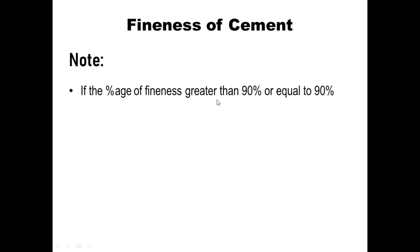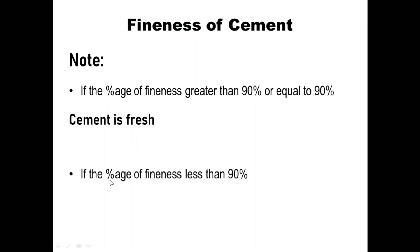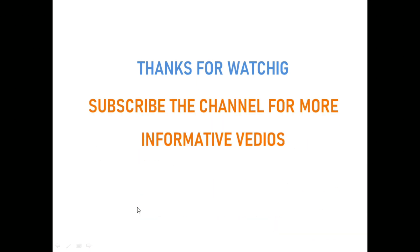Note: if the percentage of fineness retained is less than or equal to 10% (i.e., passing percentage is greater than or equal to 90%), then the cement is fresh. If the percentage of fineness retained is greater than 10%, then the cement is not fresh and we should avoid using it. Thanks for watching, and subscribe to the channel for more informative videos.